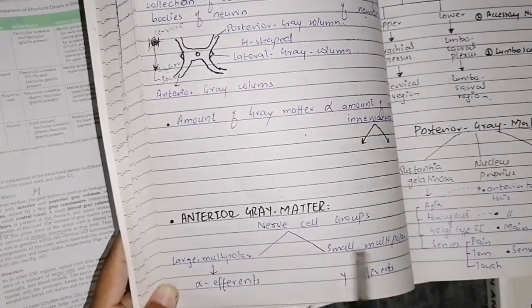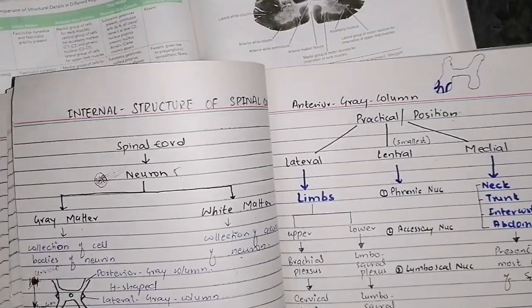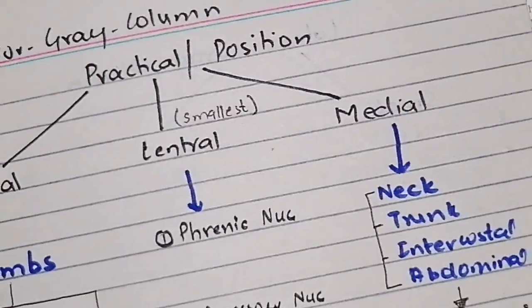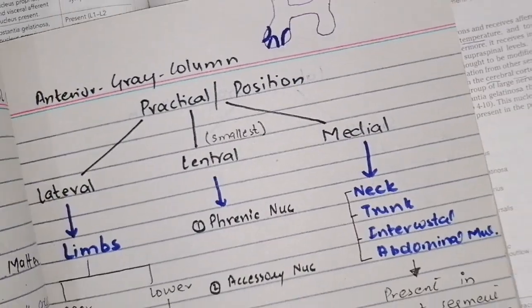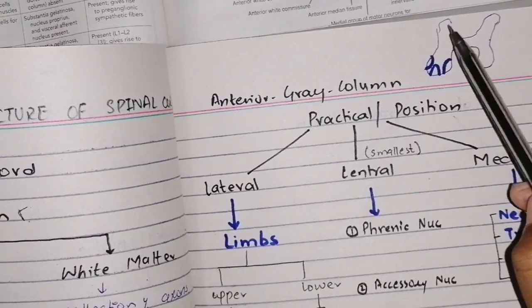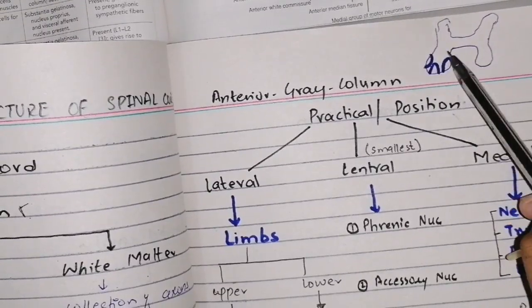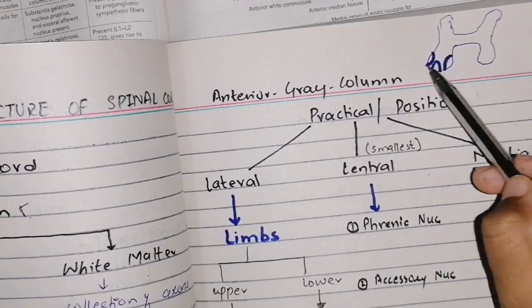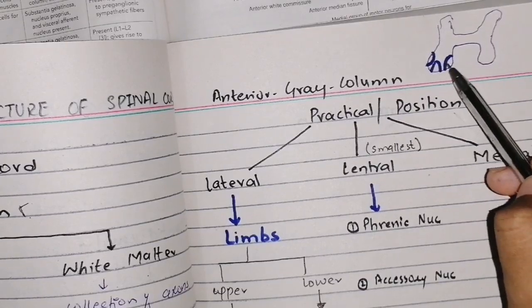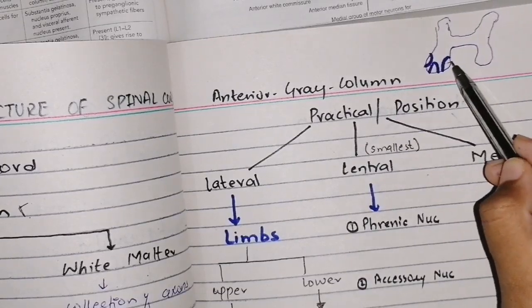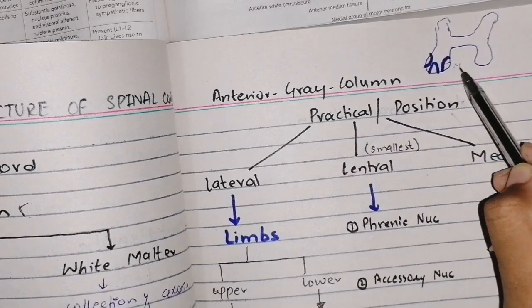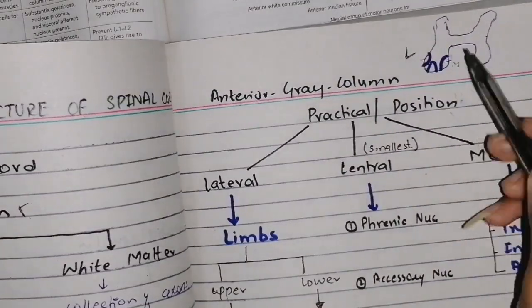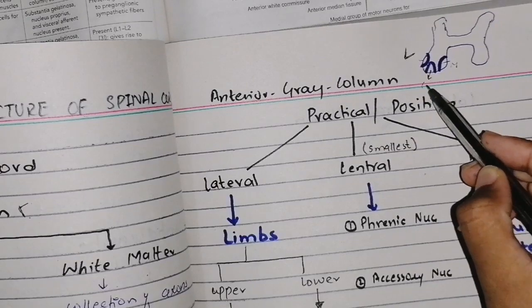Now, depending on their positions, nerve cell groups are further divided into three types. In the anterior gray matter, the inside group is the medial group, the outside group is the lateral group, and the middle is the central group.